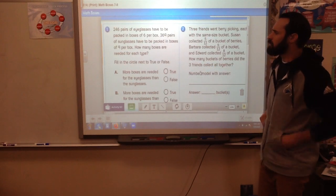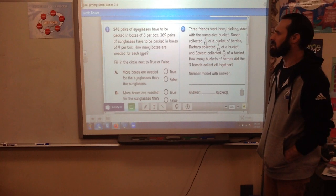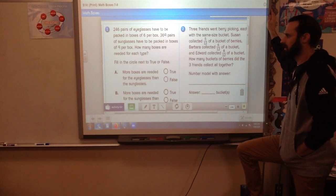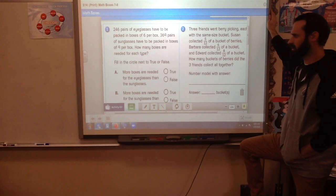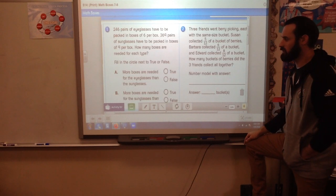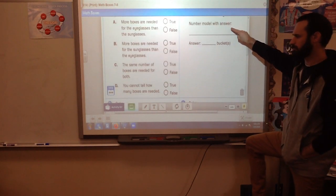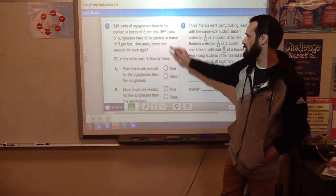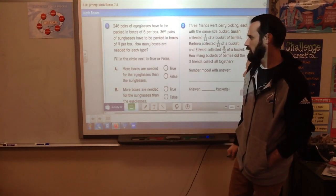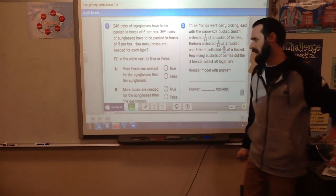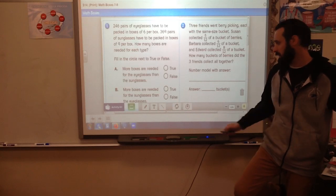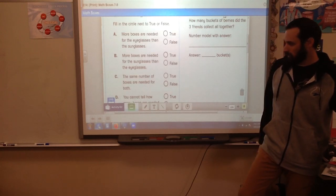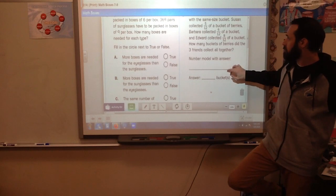Looking at the first one, 246 pairs of eyeglasses have to be packed in boxes of 6 per box. 369 pairs of sunglasses have to be packed in boxes of 9. How many boxes are needed for each type? Fill in the circle next to true or false. What you need to do here is divide 246 divided by 6 and 369 divided by 9, and then read the questions.